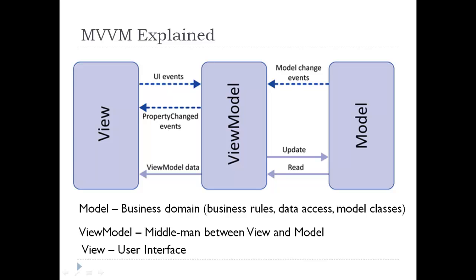Let's understand MVVM in detail, starting with the model. The model is what I like to refer to as the domain object. The model represents the actual data and information we are dealing with. An example of a model might be a contact containing name, phone number, address, etc. The key to remember with the model is that it holds the information but not behaviors or services that manipulate the information.